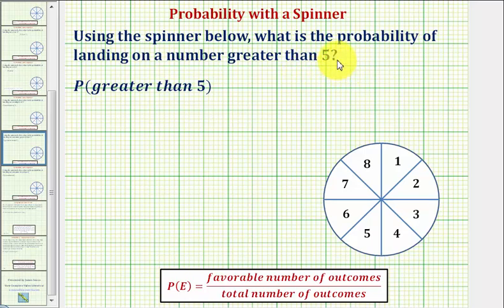To determine the probability of an event, we compare the favorable number of outcomes to the total number of outcomes. So for the probability of greater than five, let's first determine the total number of outcomes from the spinner.